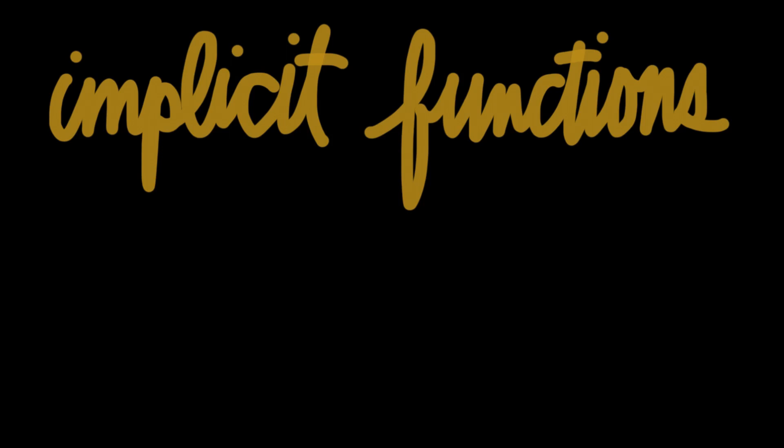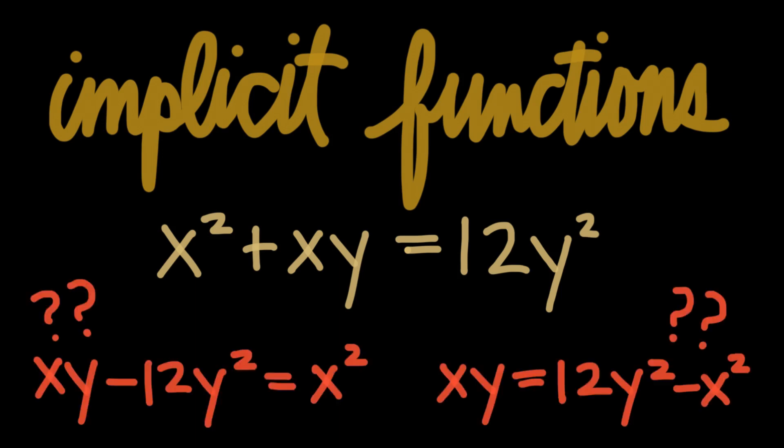Implicit functions look like this: x's and y's are tangled up together in such a way that they are not easily separated. In this function, for example, we can try to isolate the variable a couple of different ways, but it just doesn't work.